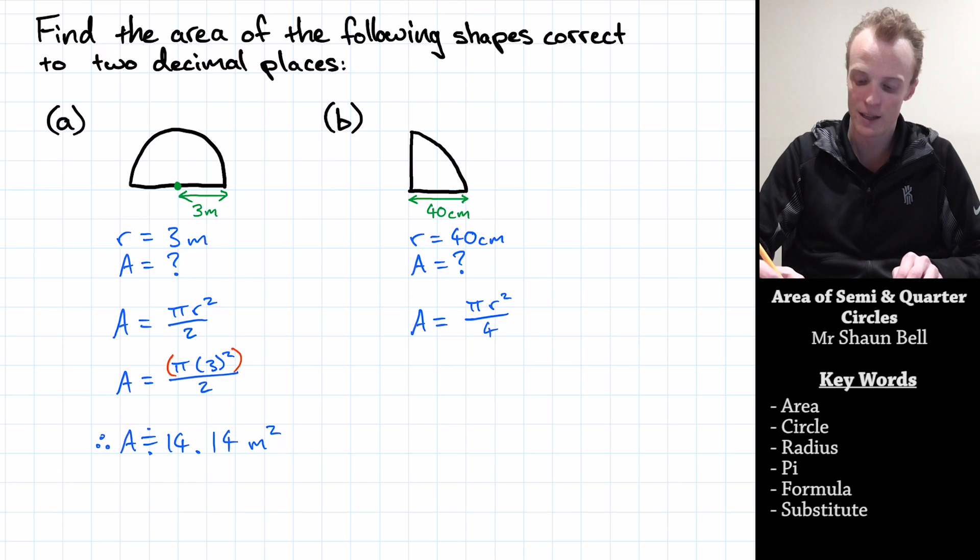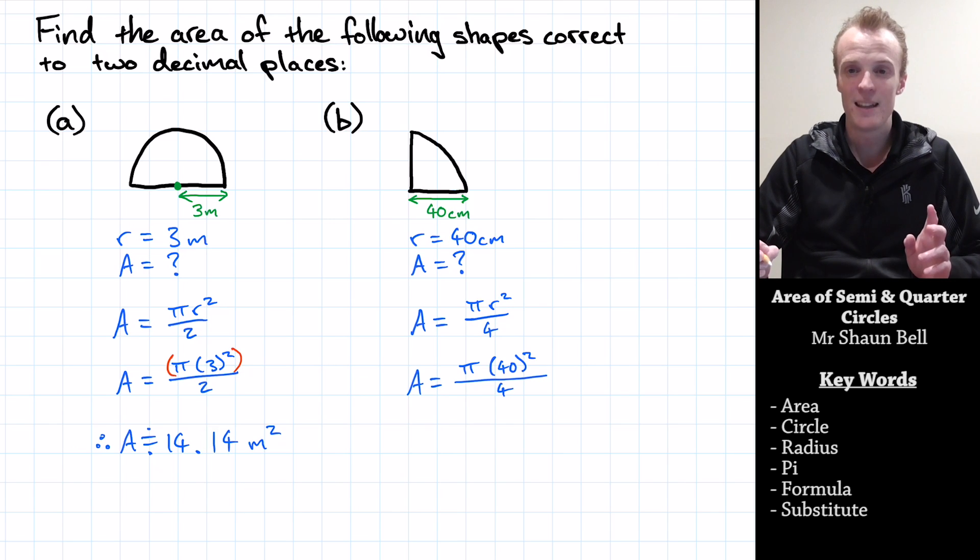So what I do now is I substitute the value for my radius. So this is going to be equal to pi times the radius of 40 squared, all divided by four. Once again, it's just a good habit to remember that invisible brackets exist on the top and bottom lines of any fraction.